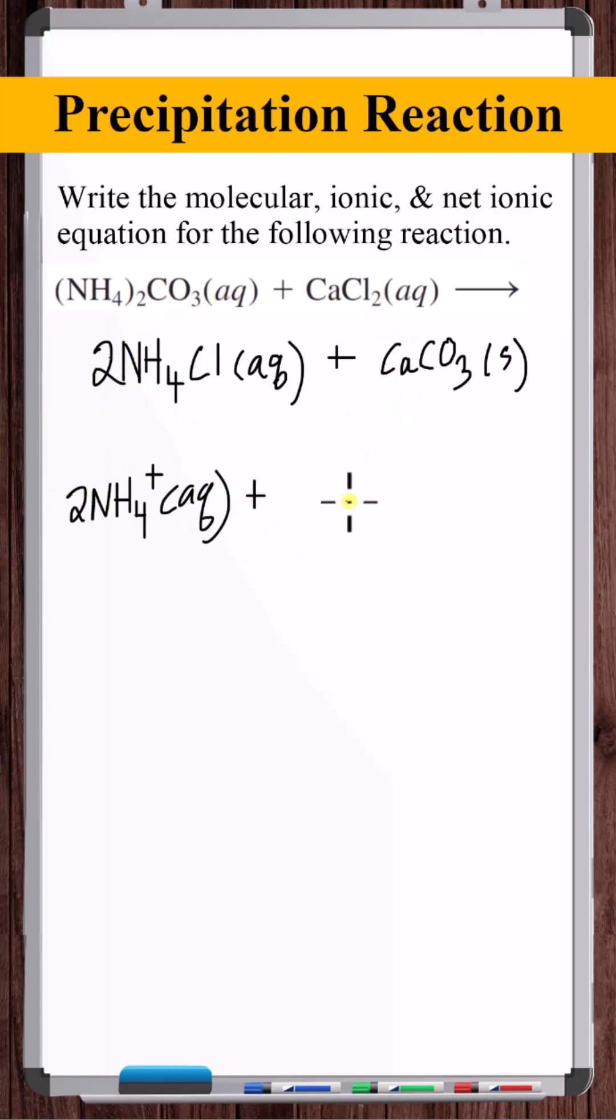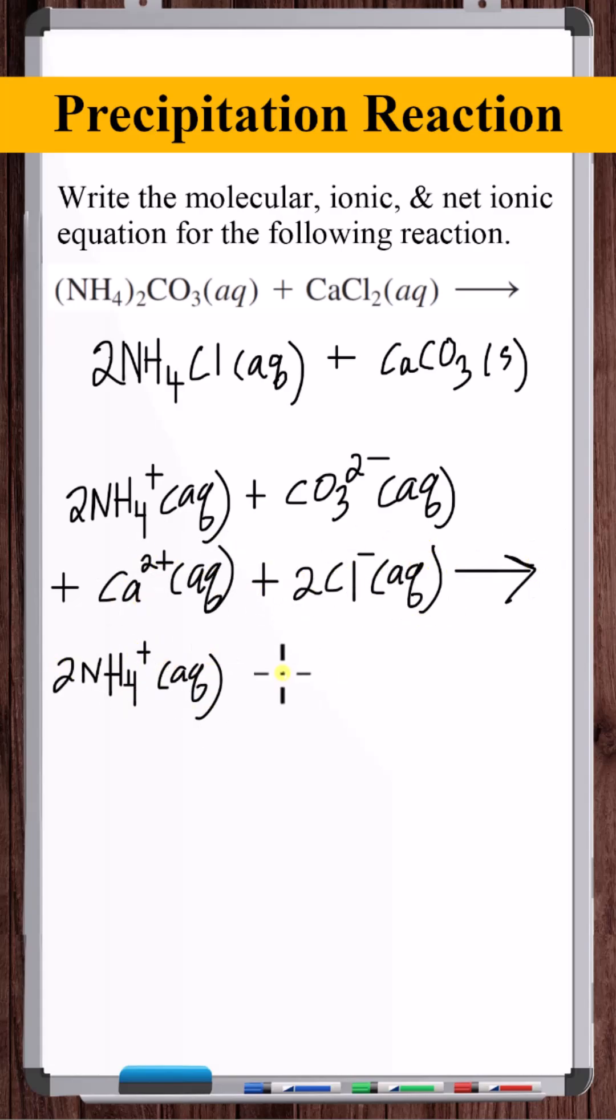For the ionic equation, we disassociate all aqueous compounds that are strong electrolytes into ions and leave everything else as a compound. Make sure to put the correct coefficients on the ions, depending on the subscript or the coefficient in the molecular equation.